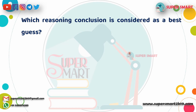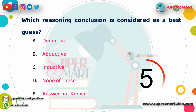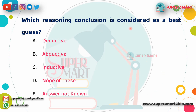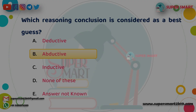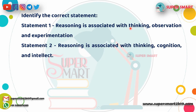Next question: Which reasoning gives a conclusion considered as the 'best guess'? Options: deductive, abductive, inductive, or none of these. Answer: Abductive reasoning.